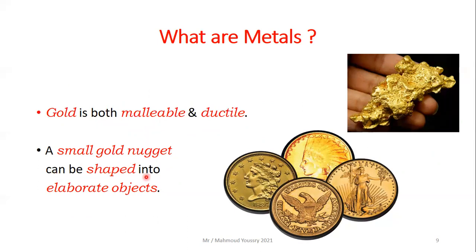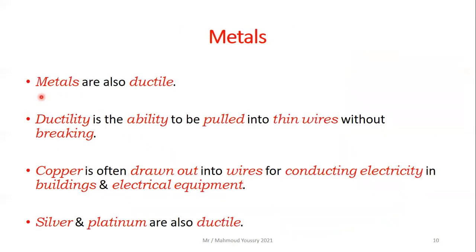A small gold nugget can be shaped into elaborate objects like golden coins. Metals are also ductile. Ductility is the ability to be pulled into thin wires without breaking. Copper is often drawn out into wires for conducting electricity in buildings and electrical equipment. Silver and platinum are also ductile.